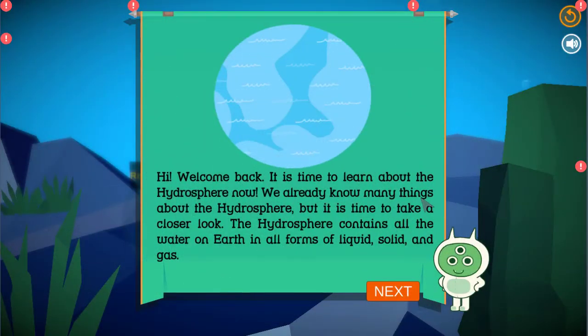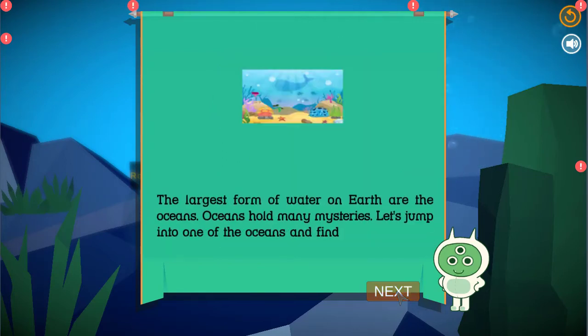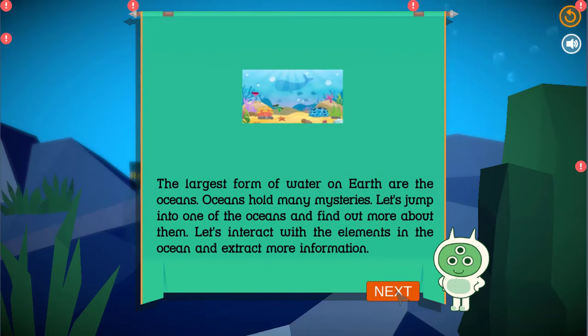Hi! Welcome back! It is time to learn about the hydrosphere now. We already know many things about the hydrosphere, but it is time to take a closer look. The hydrosphere contains all the water on Earth in all forms of liquid, solid, and gas. The largest form of water on Earth are the oceans. Oceans hold many mysteries. Let's jump into one of the oceans and find out more about them. Let's interact with the elements in the ocean and extract more information.